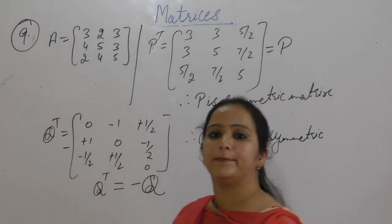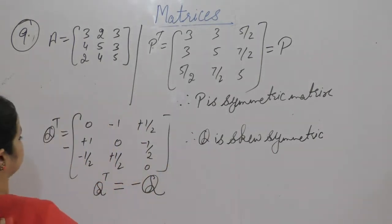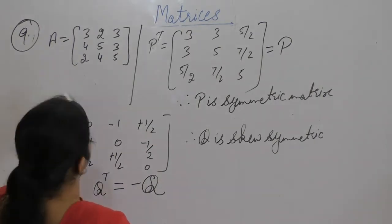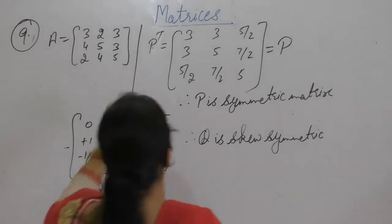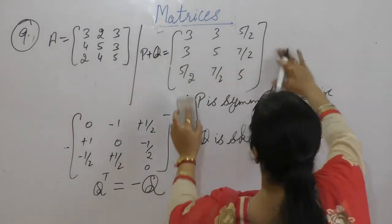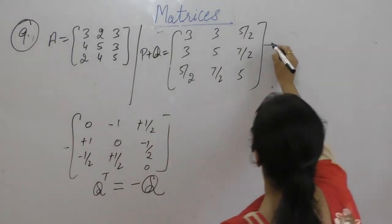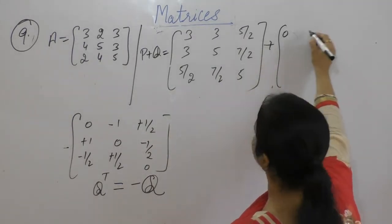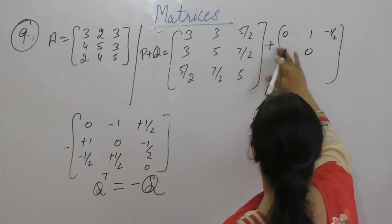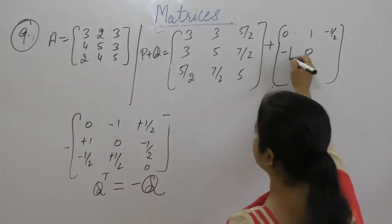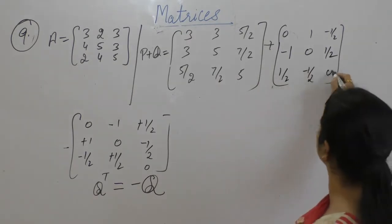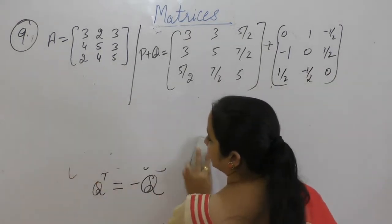Now verify P and Q matrices. P matrix has entries 3, 3, 5/2; 3, 5, 7/2; 5/2, 7/2, 5. Q matrix has entries 0, 1, -1/2; -1, 0, 3/2; 1/2, -1/2, 0. Adding matrix P and Q element by element.